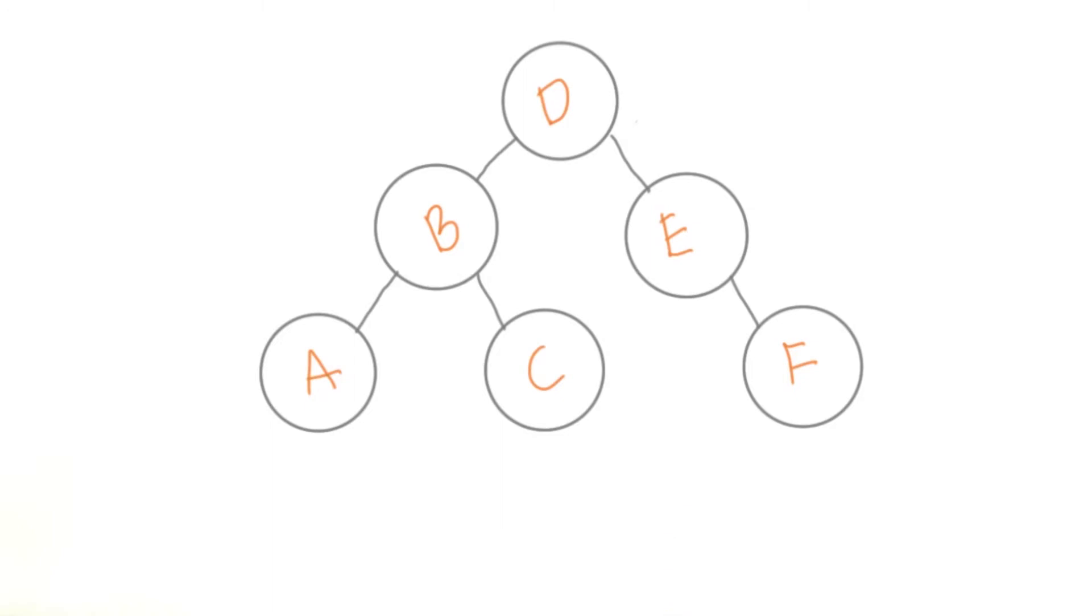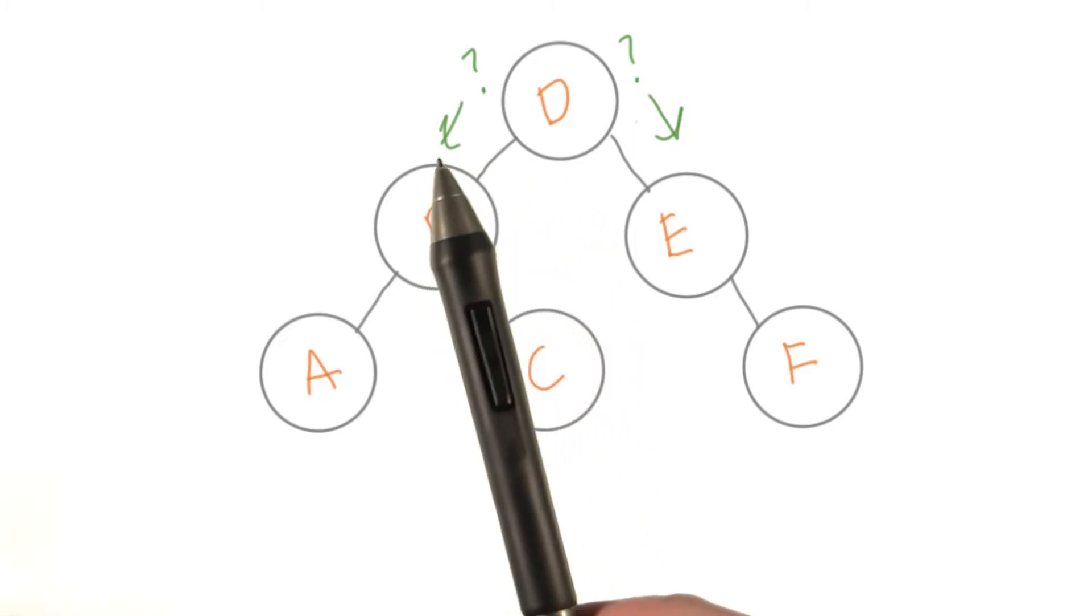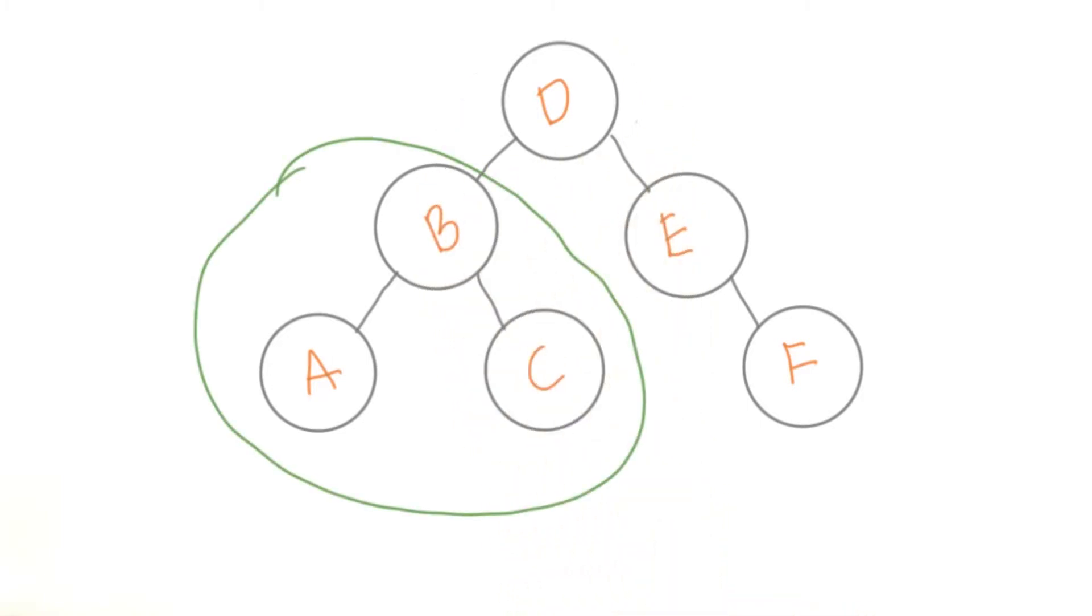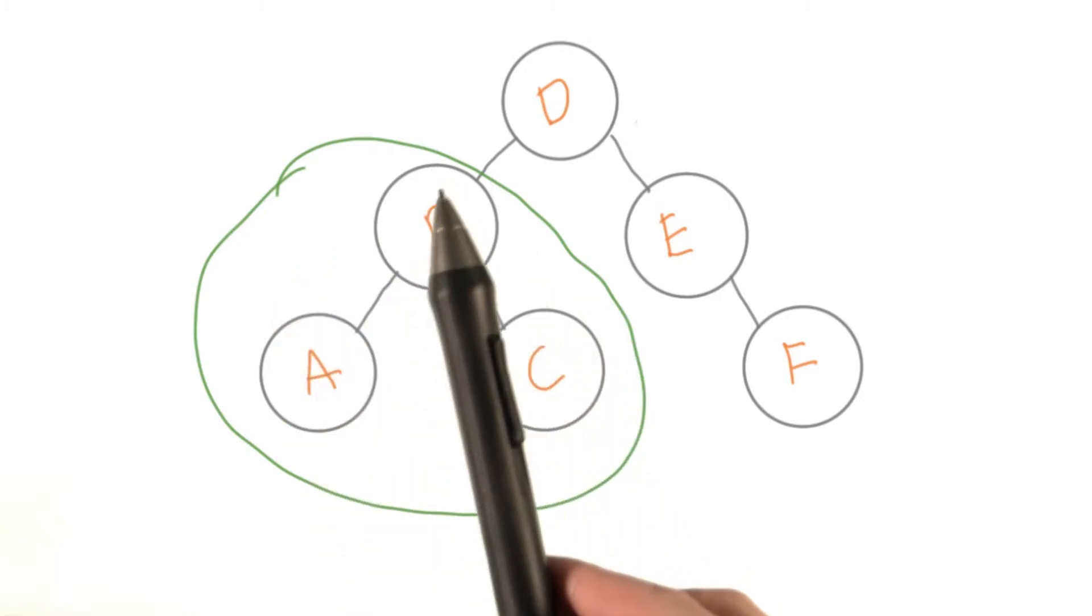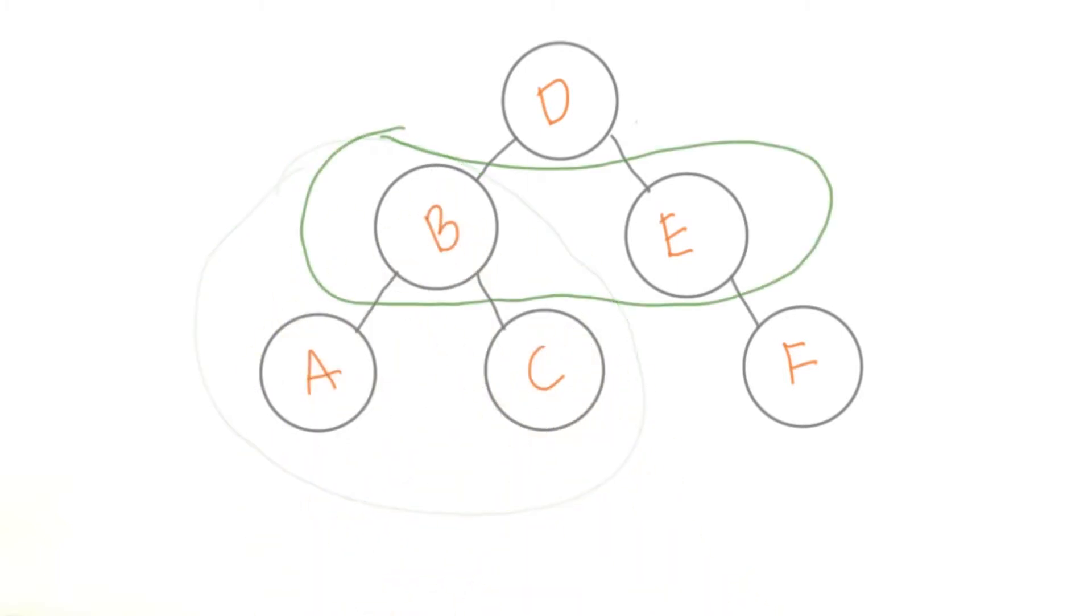Trees aren't linear, so there's no clear way to traverse through everything. Suppose we start at the root. Do we go left first or right first? Should we completely traverse one subtree or one section of the tree, including a parent and all of its descendants? Or traverse everything at the same level first?